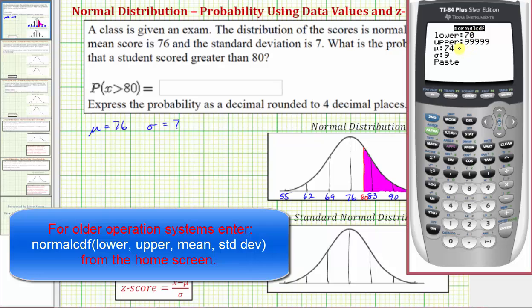Now if you don't see this screen, you have an older operating system, and I'll explain the difference in just a moment. We first need to enter the lower bound, and because we're looking for the probability that x is greater than 80, the lower bound is going to be 80, the value here on the left.